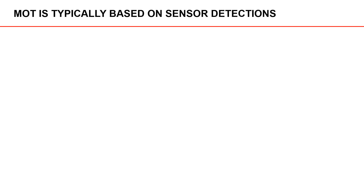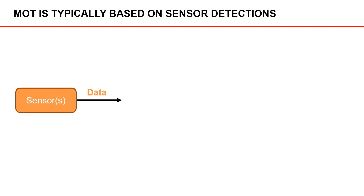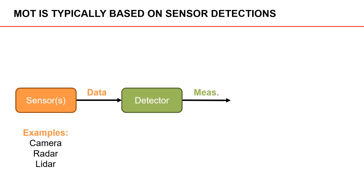Typically, multiple object tracking is based on sensor detections. We have a sensor, or possibly multiple sensors, and from these we get data. Common sensors in multiple object tracking are cameras, radars, and lidars. The sensor data serves as input to a so-called detector, which outputs measurements or detections.